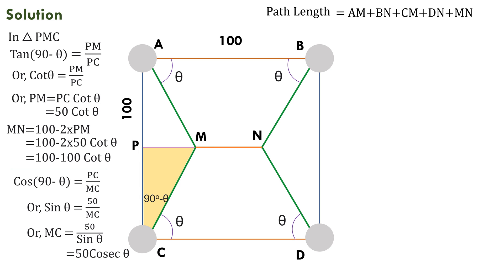Let's see what the total path length will be. But because AM equals BN equals CM equals DN, we can say total path length equals 4 times MC plus MN equals 4 times 50 cosec theta plus 100 minus 100 cot theta. Let this total path length be represented as x.